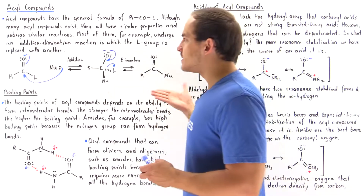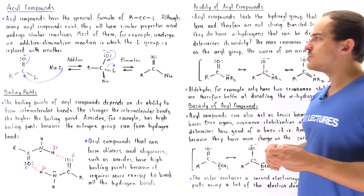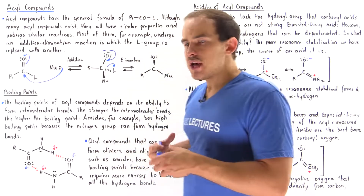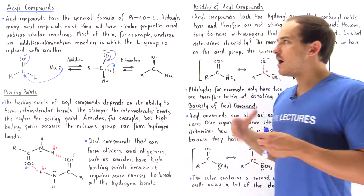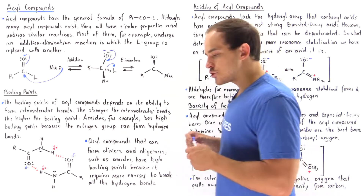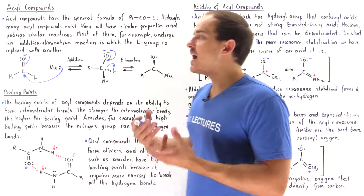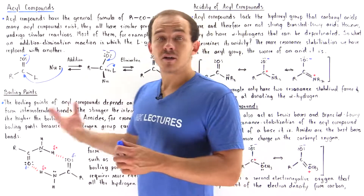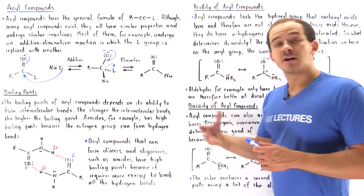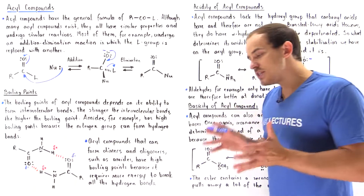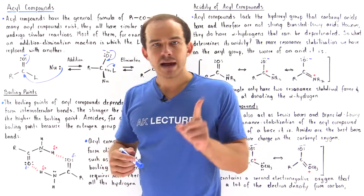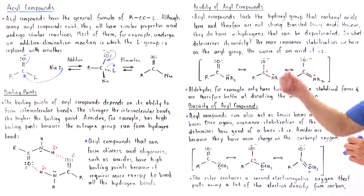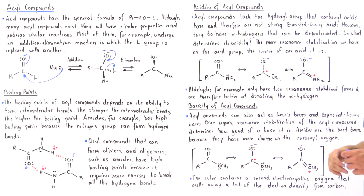This is the most common type of reaction — the addition-elimination reaction — that acyl compounds undergo. There are many similarities between the different types of acyl compounds that exist in nature, because they have very similar structures, physical properties, and chemical reactivities.